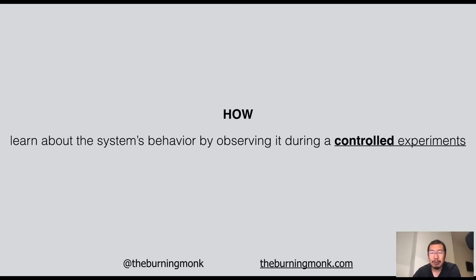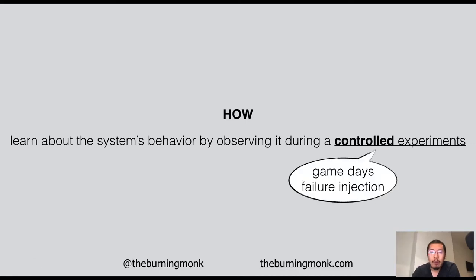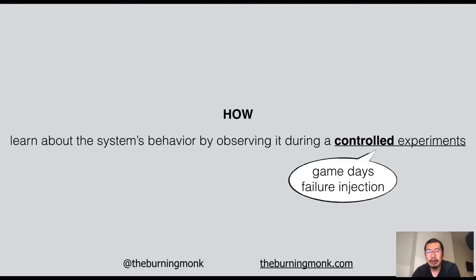We do that by using controlled experiments to learn about how our systems actually behave when failure conditions happen. In the same way that we write tests for our business logic, we need to test our system's robustness and resilience against the turbulent conditions it's going to face in production. This could be through organized events such as game days, where you gather together as a team and one of you will turn off the networking on one of your servers to see whether you have sufficient monitoring and diagnostics in place, or by programmatically injecting failures into the system to see just how it handles them.